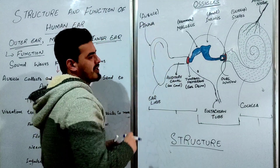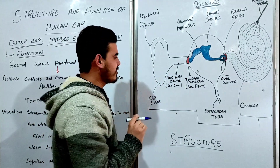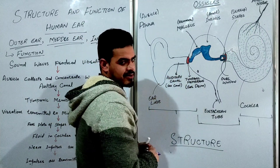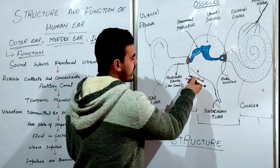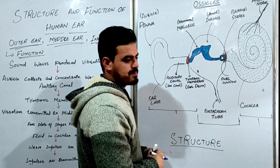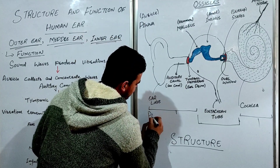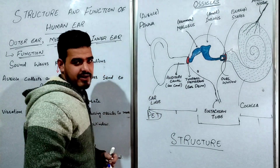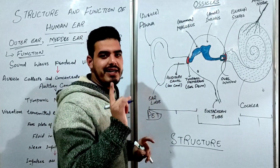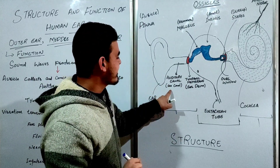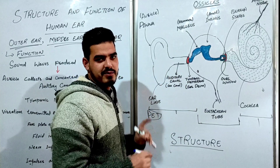The outer ear consists of the auricle (pinna) that you can see, followed by a channel called the auditory canal or ear canal. The last part is a membrane called the tympanic membrane or eardrum. To remember the parts of the outer ear, use the mnemonic PET: P stands for Pinna, E stands for Ear canal, and T for Tympanic membrane.